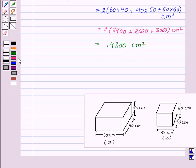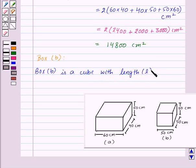Now let us consider box B. Here we can observe that box B is a cube with length equal to 50 cm. So let's write box B is a cube with length, that is L, is equal to 50 cm.